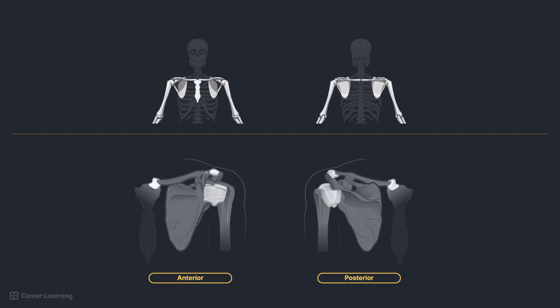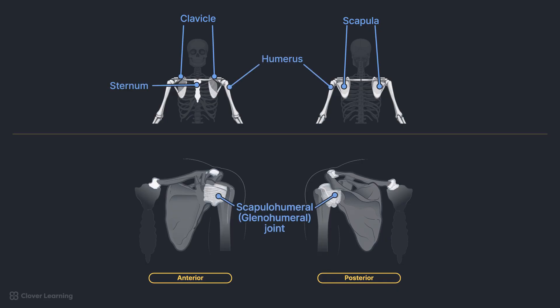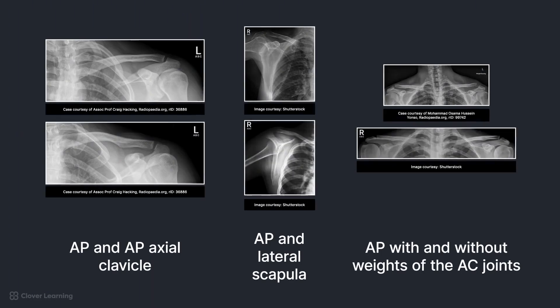In summary, the shoulder girdle is made up of the clavicle anteriorly and scapula posteriorly. These bones articulate with the humerus, sternum, and each other at the scapulohumeral, sternoclavicular, and acromioclavicular joints. The AC joints are often radiographed separately to check for separation. Routine radiographic projections include AP and AP axial clavicle, AP and lateral scapula, and AP with and without weights of the AC joint. In the next lesson, we will take a closer look at the radiographs to identify this anatomy.